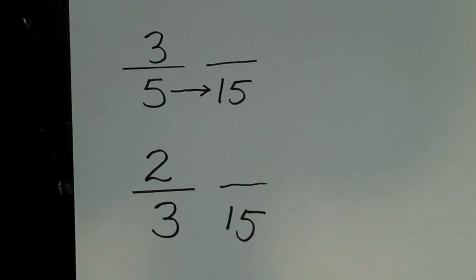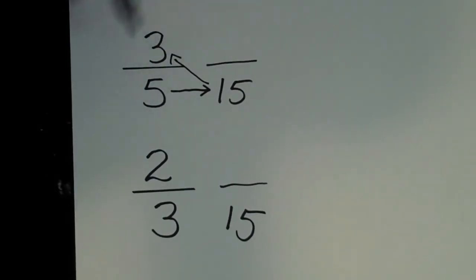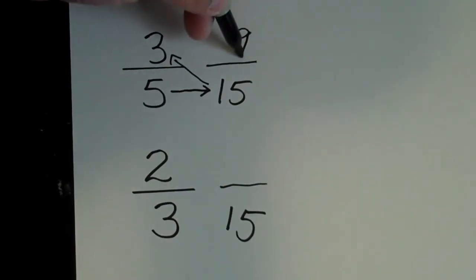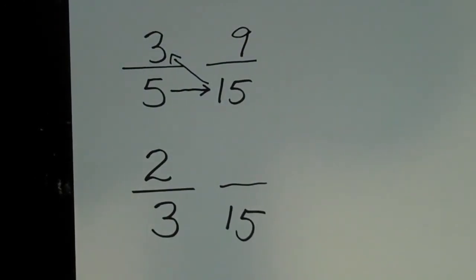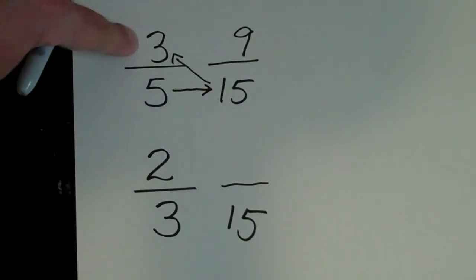I would divide 5 into 15, which is 3. So always divide across. 5 into 15 is 3. And then take that 3 and multiply it by this 3. And that would give you 9. So let me do that one more time. I divided 5 into 15 and got 3. 3 times 3 is 9.